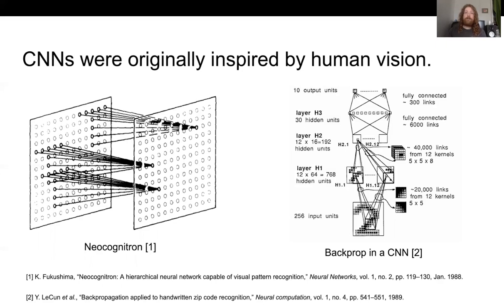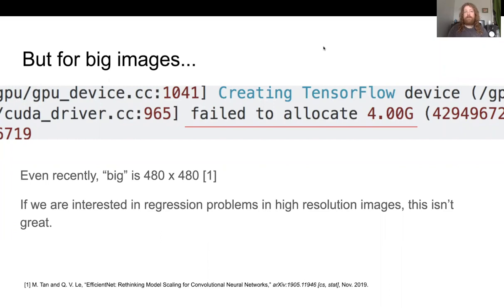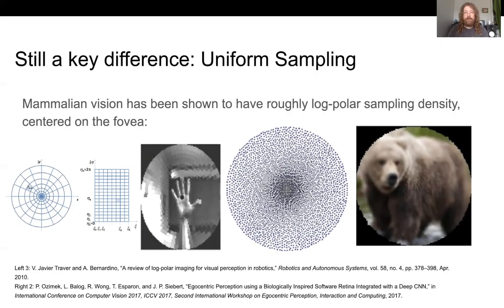So CNNs were originally inspired by human vision. But for big images, we see they're not exactly like human vision because if you try to put an image the size we're working with directly into a vanilla convolutional neural network, you're going to run out of memory. The key difference is that convolutional neural networks sample uniformly from the image, whereas mammalian vision has been shown to have a roughly log-polar sampling density centered on the fovea, wherever your gaze is currently directed.